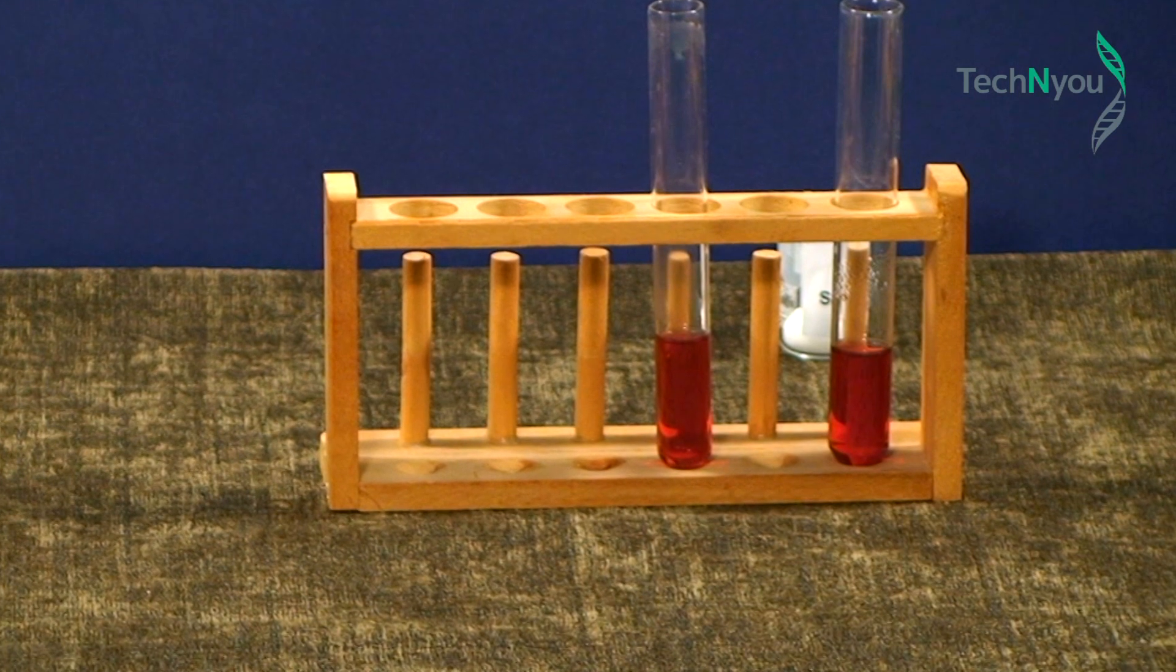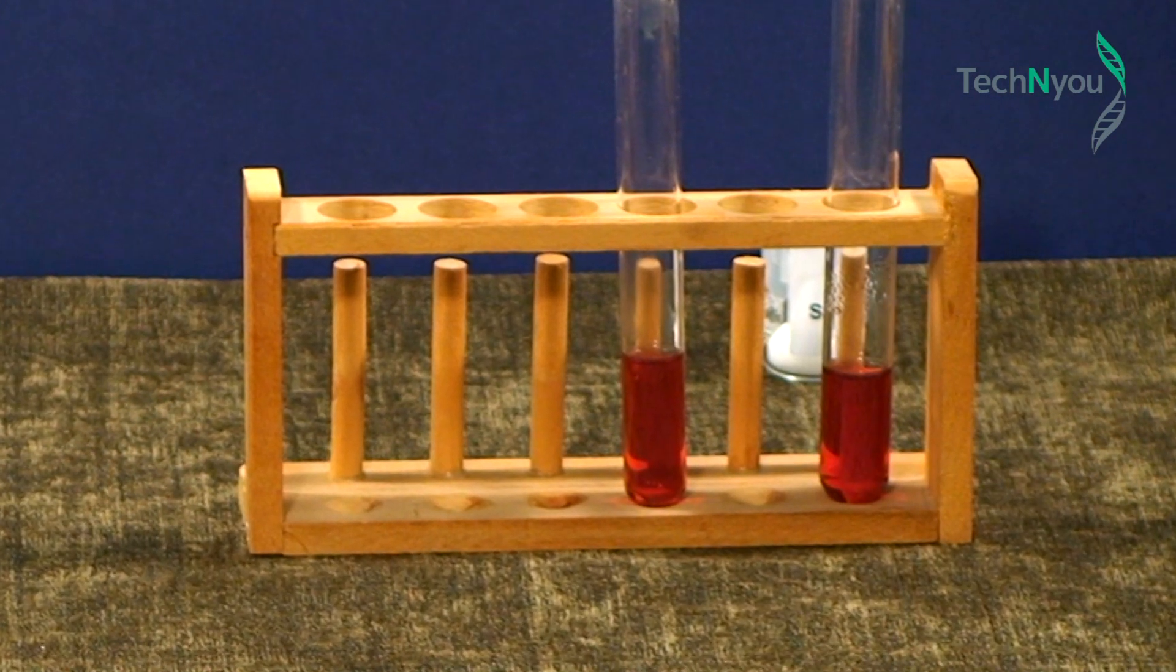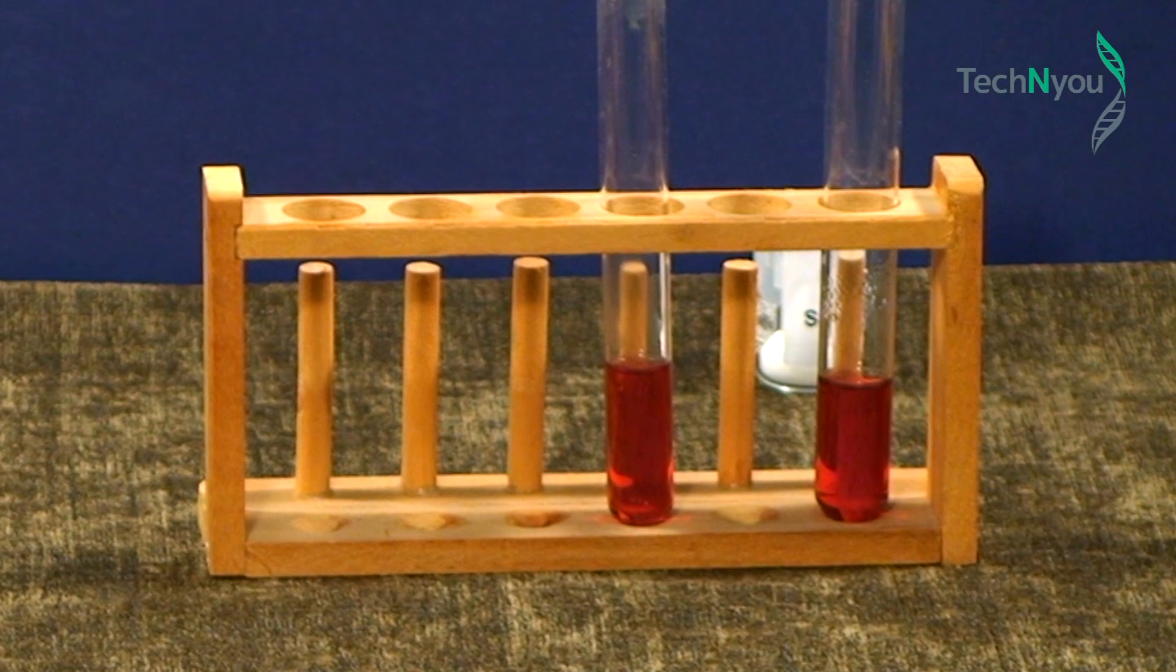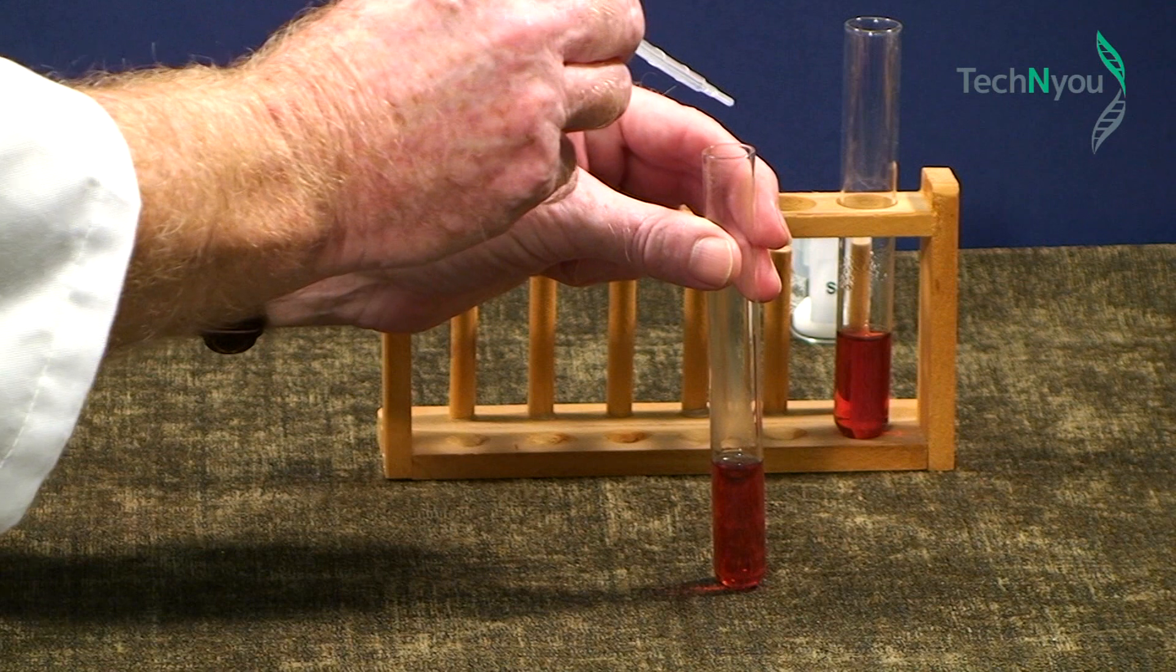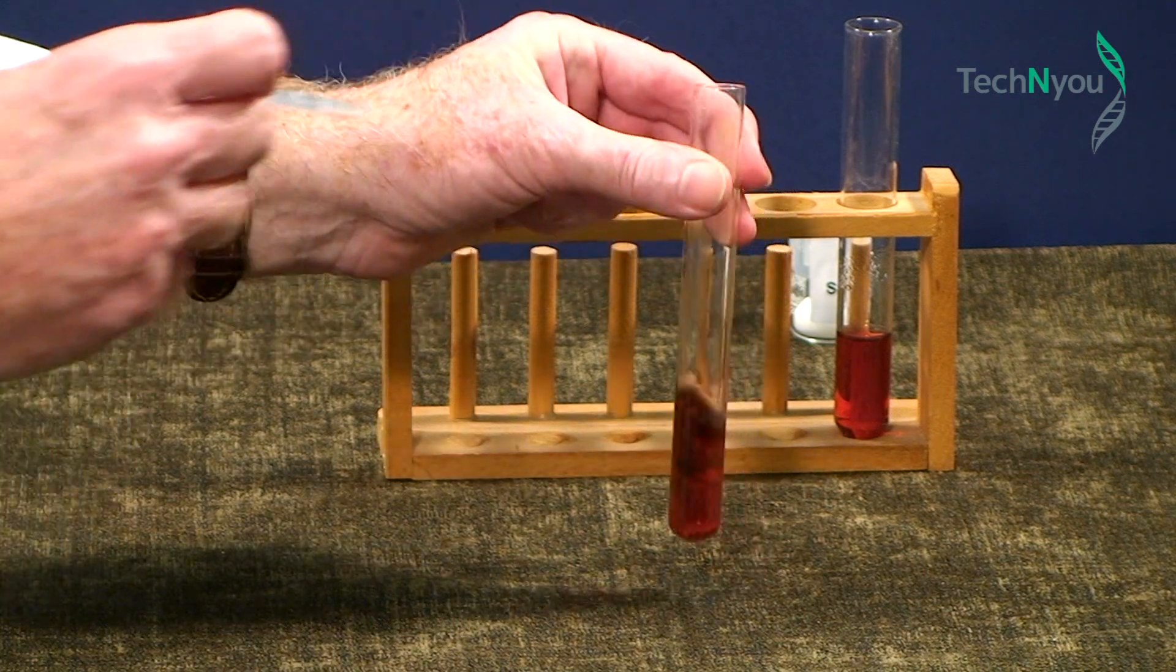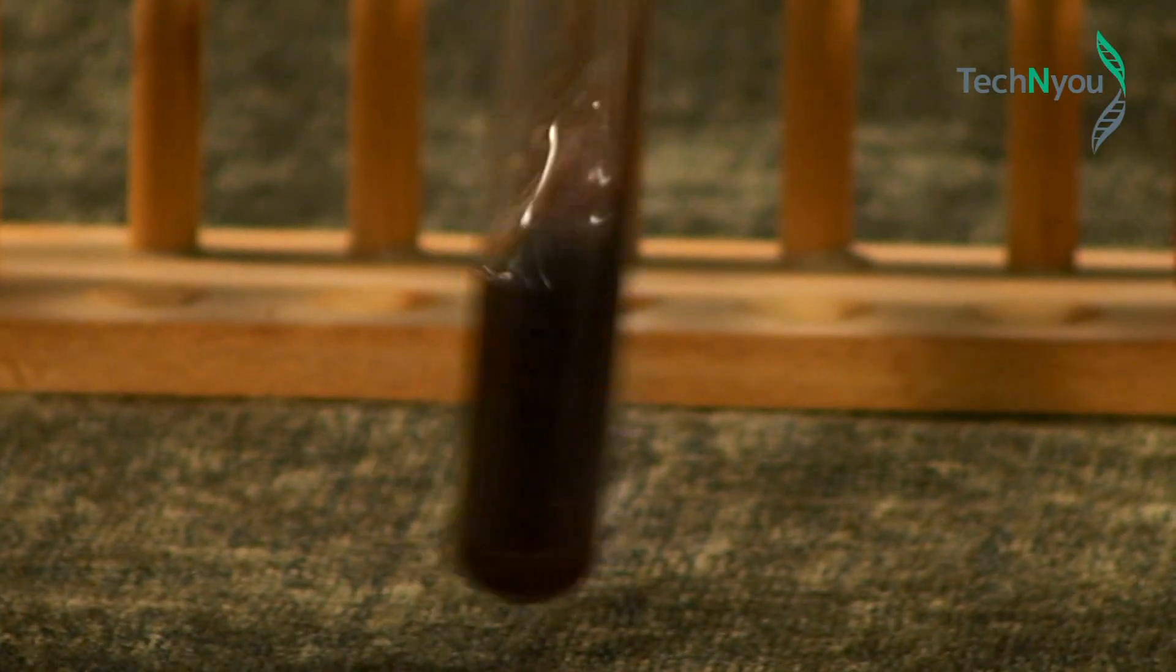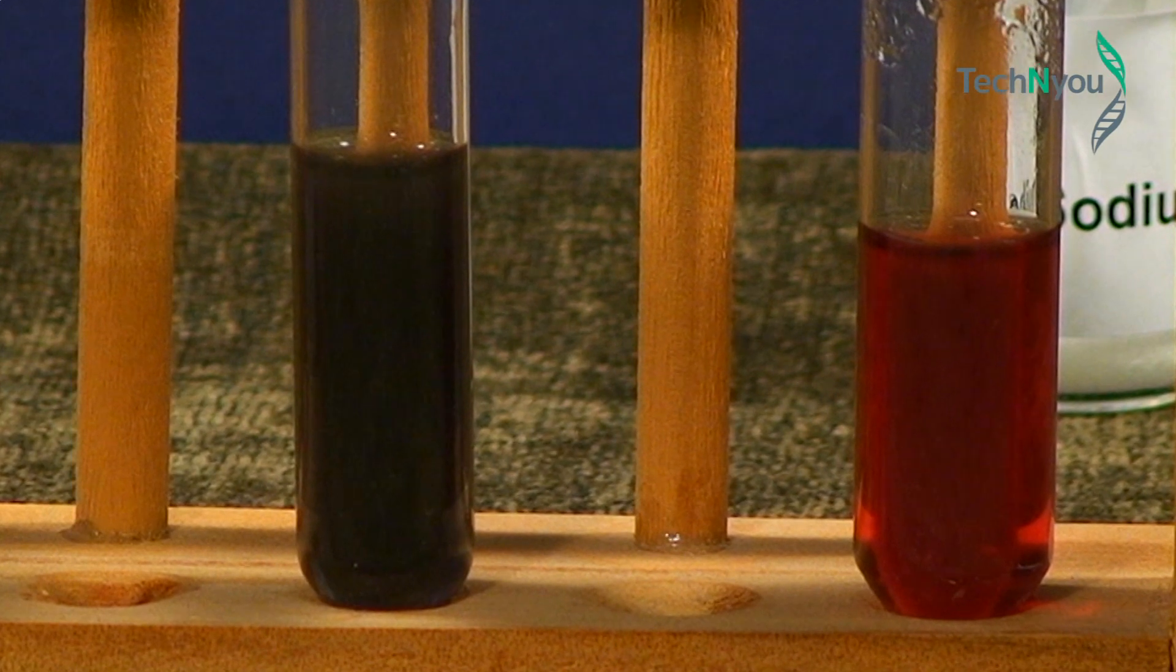We will now increase the size of the nanoparticles and observe how that impacts on their color. Here in the test tube holder are two samples of the particles we've just produced. We will add to one of the test tubes a few drops of sodium chloride solution, shake it and observe the results.